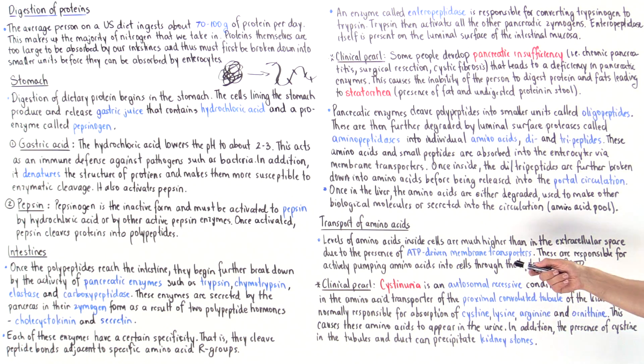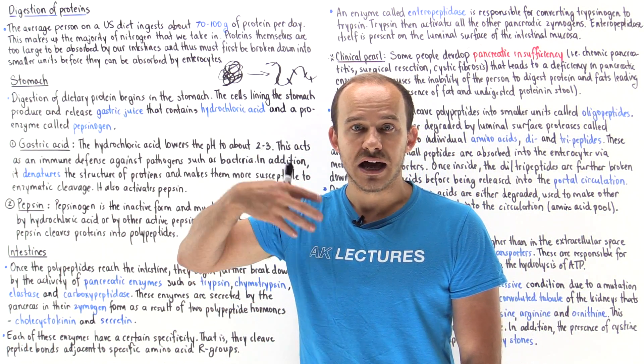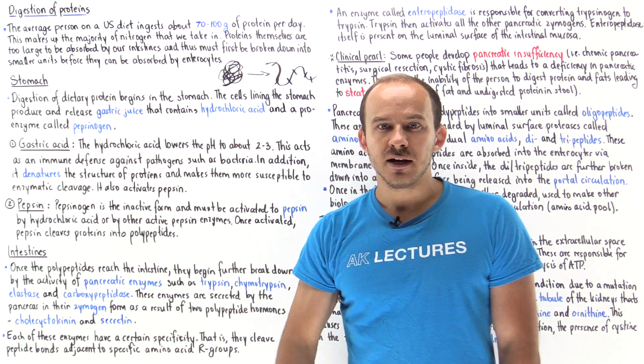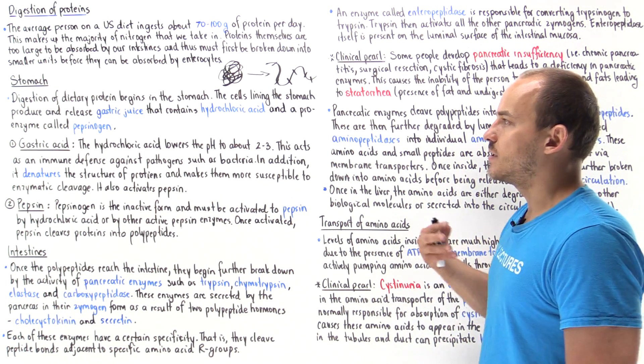The way that we treat this is we ensure the patient actually drinks a lot of water. Because if they drink a lot of water, then we can clear the tubules in the lumen of the tubules of these amino acids.